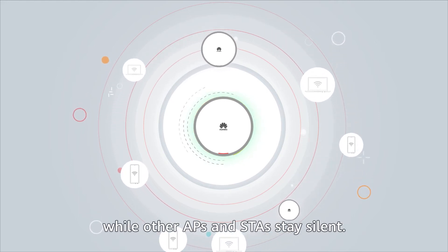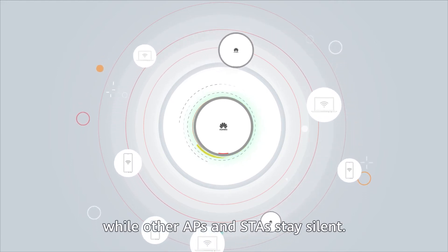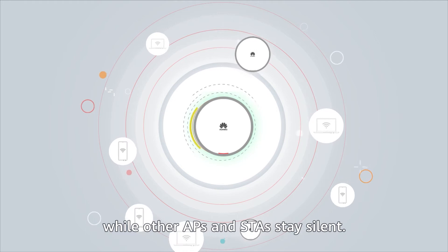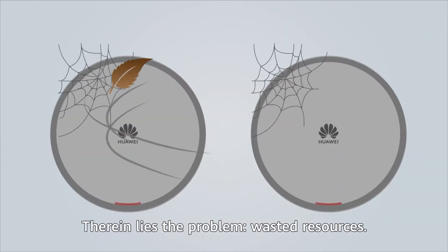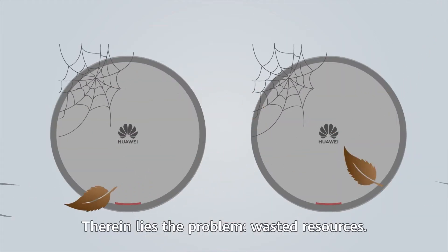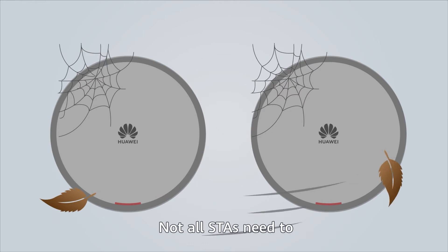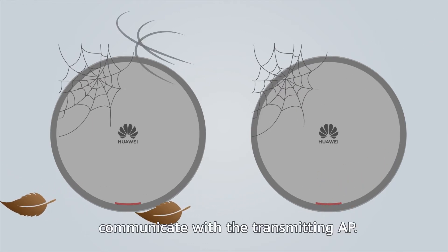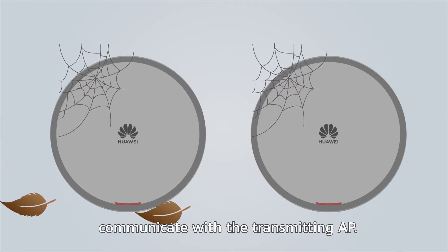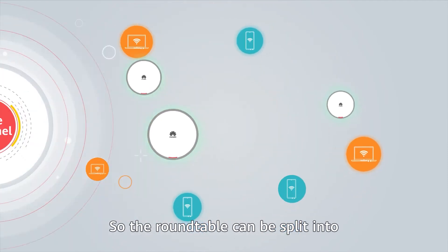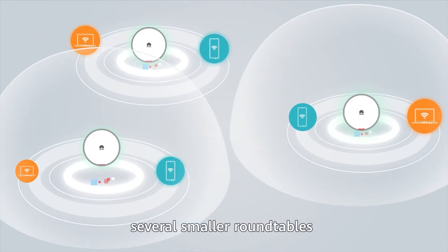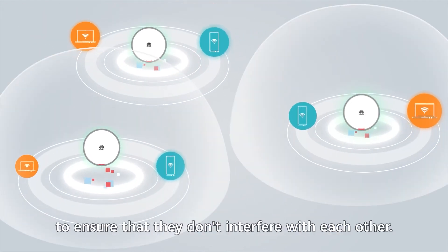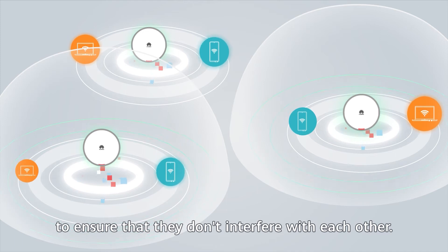Therein lies the problem — wasted resources. Not all stations need to communicate with the transmitting AP. So the roundtable can be split into several smaller roundtables to ensure that they don't interfere with each other.